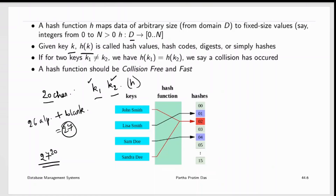After we feed a search key into a hash function, it maps the record the search key is pointing to through a hash bucket. For two different search keys, if the hash function returns the same hash value, both of those records will be mapped to the same bucket. A bucket can have one or more records in it depending on its size. Let's say a bucket can hold two records — once K1 and K2 are both mapped to it, the bucket is filled. If one more key K3 is also mapped to the same bucket, that is called an overflow.